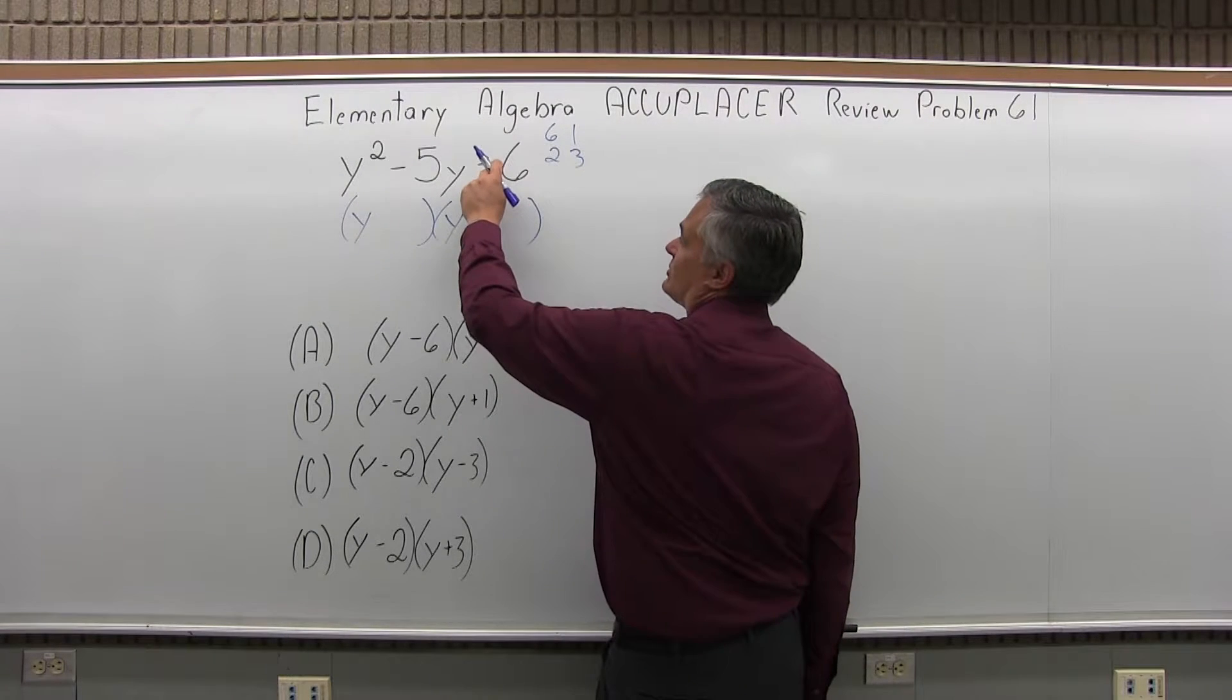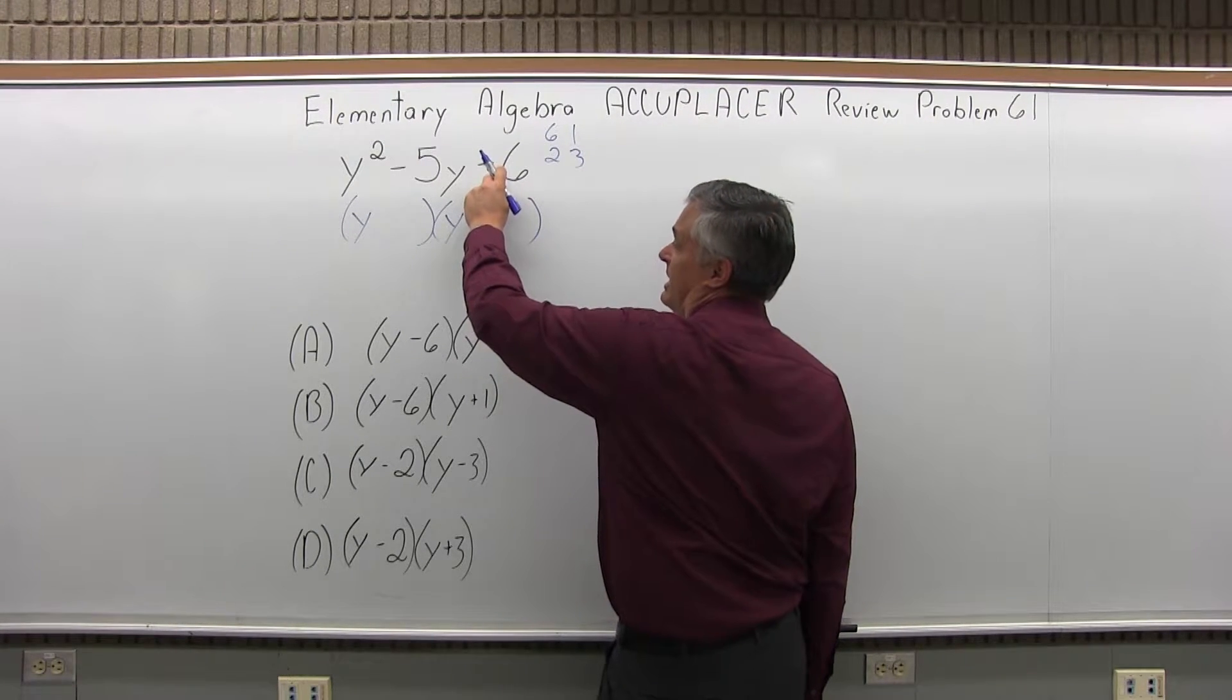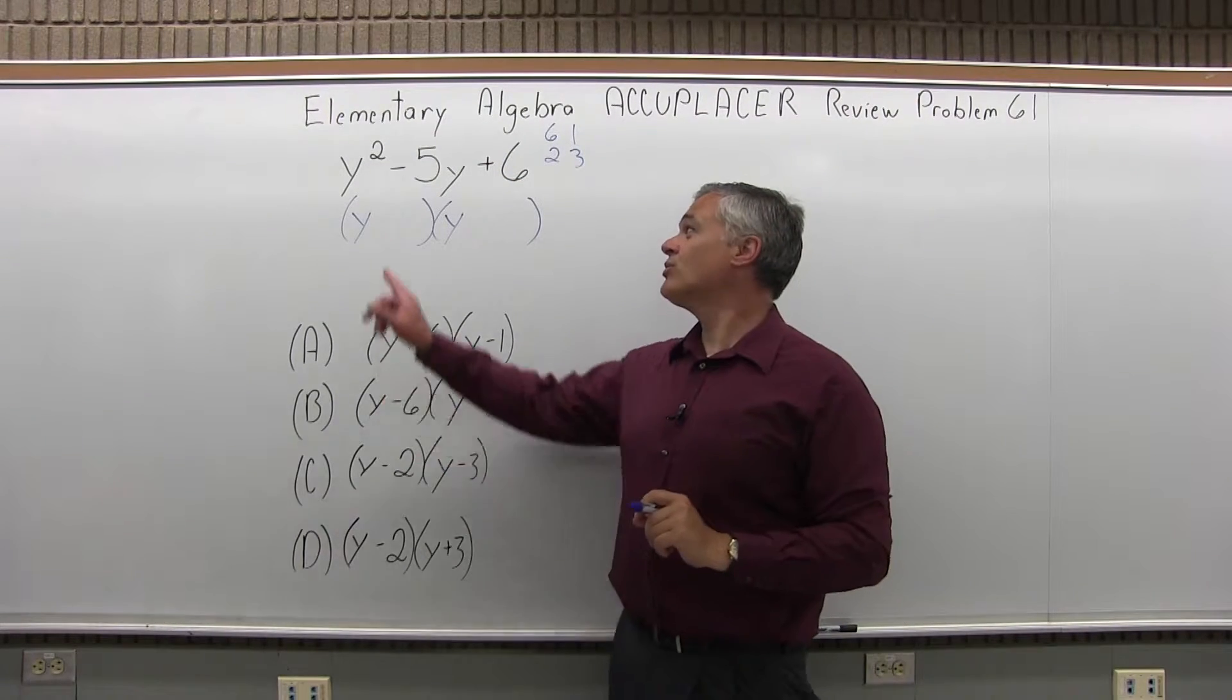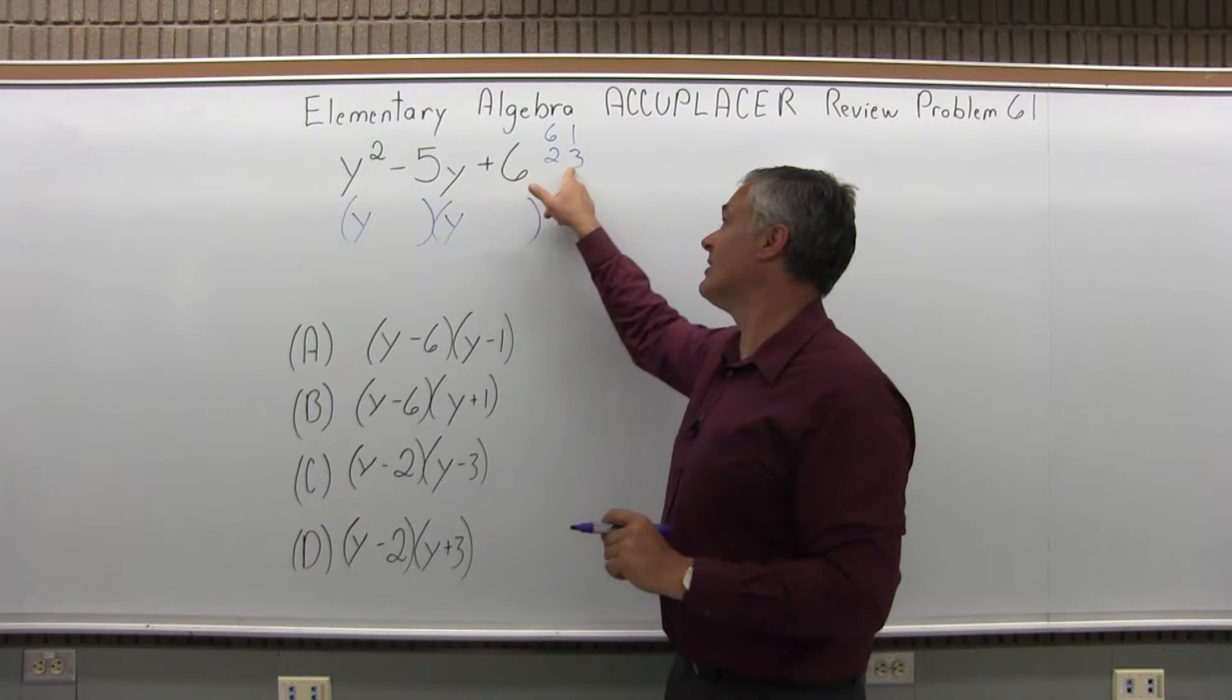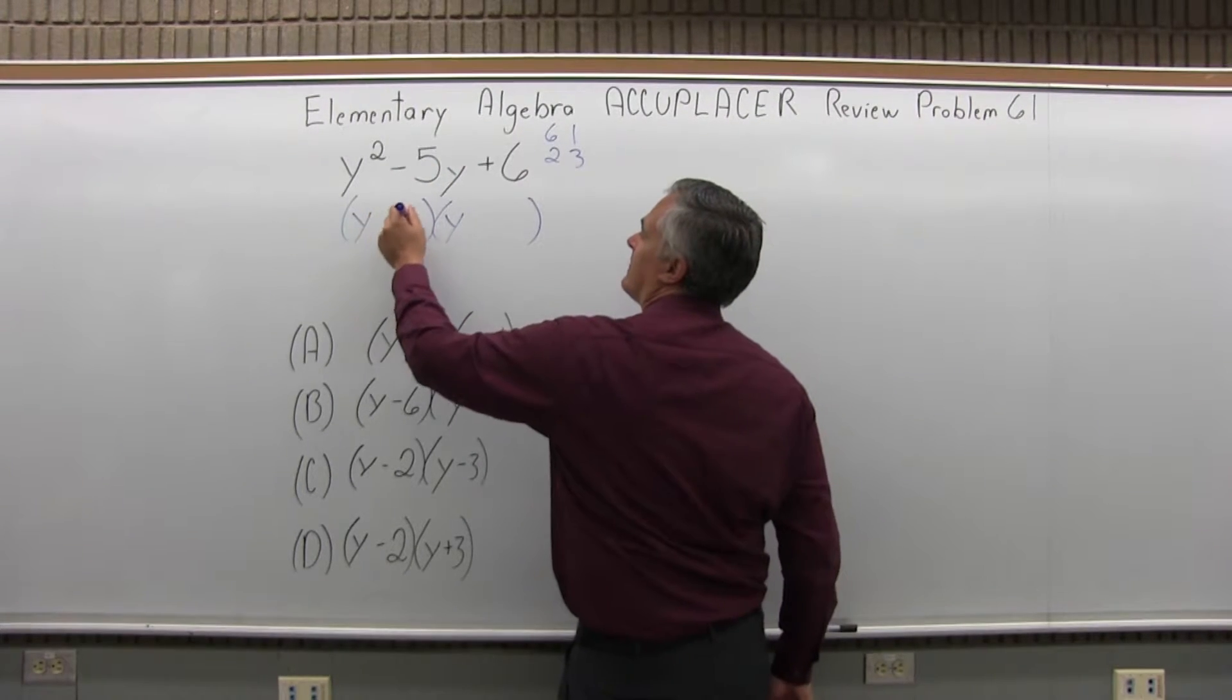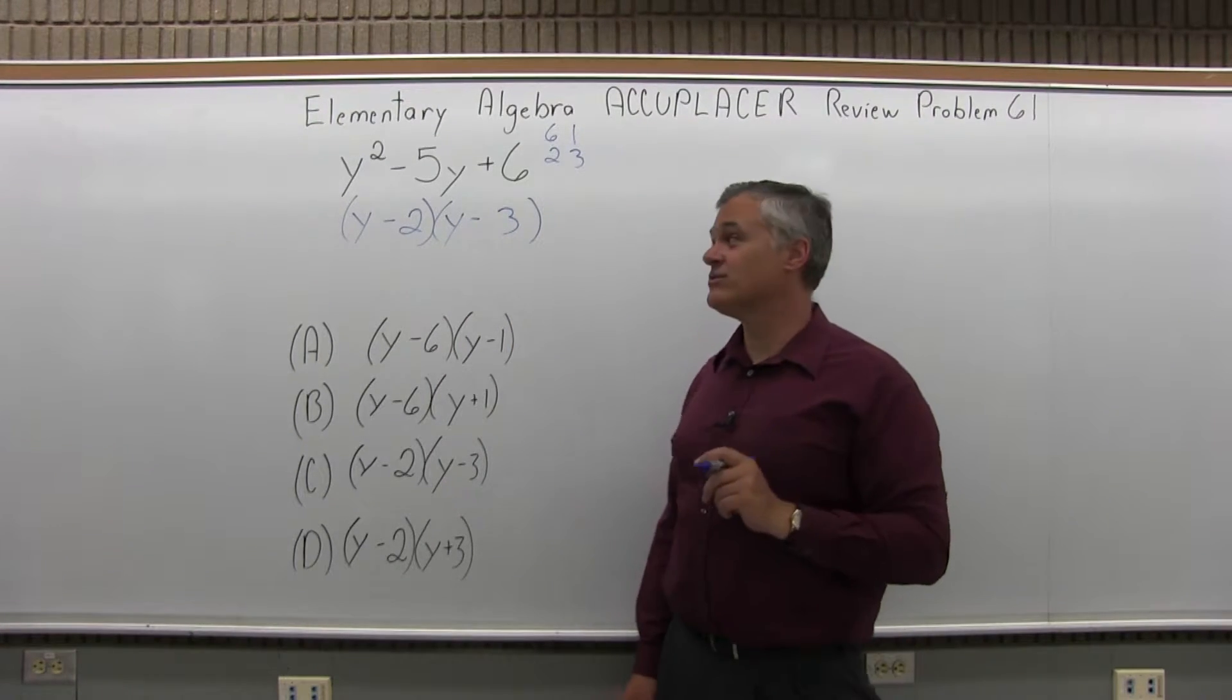Now because I know this trick, because the second sign is positive in front of the plus 6, both signs have to be the same, and they're both whatever the middle sign is. So this is telling me that I'm going to be adding together minus 2 and minus 3. So it should factor this way, y minus 2, y minus 3.